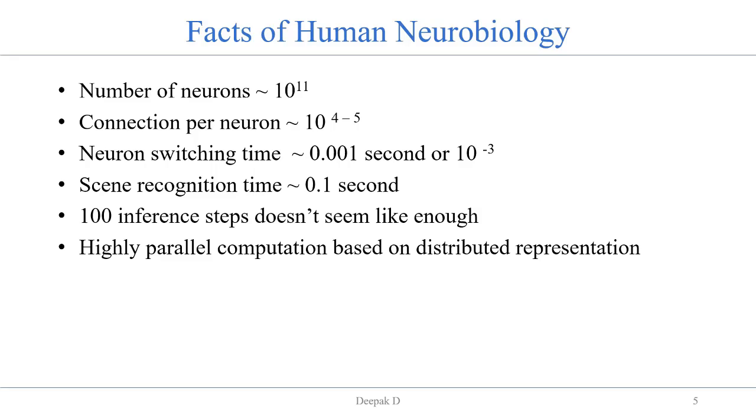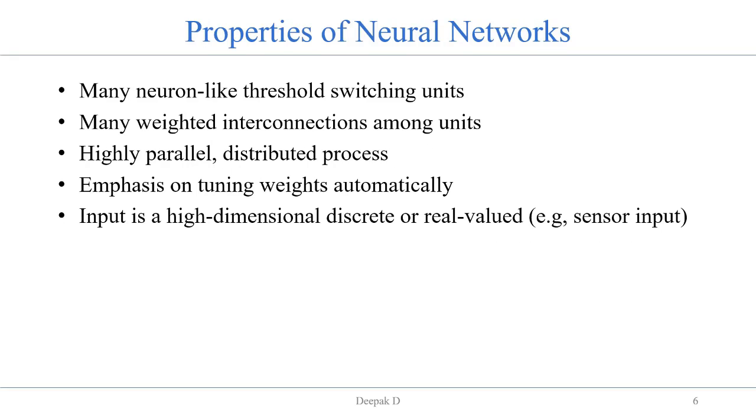We have some properties of neural networks. These many neurons are like threshold switching units, and many of the neurons have weighted interconnection among the units which are highly parallel and distributed process and which emphasize tuning weights automatically. The input is high dimensional discrete or real valued data, and sometimes the best example is our sensor input data.